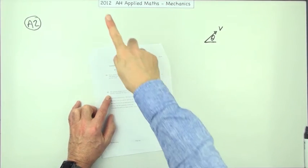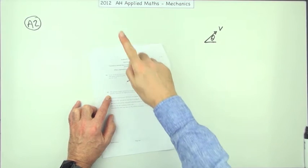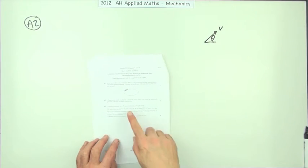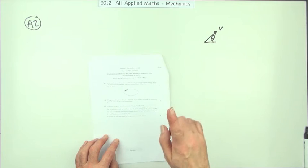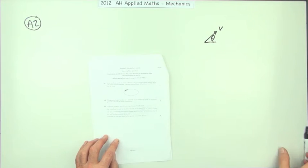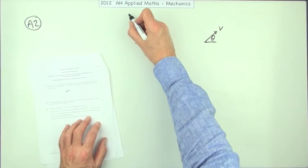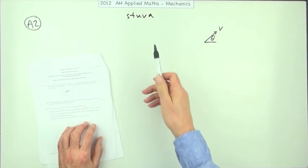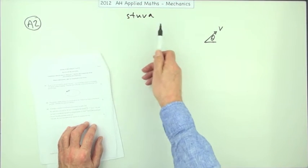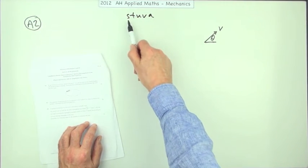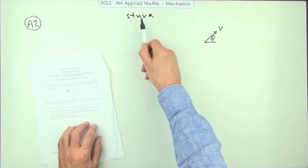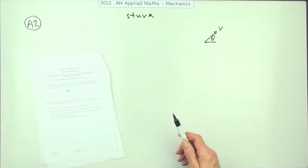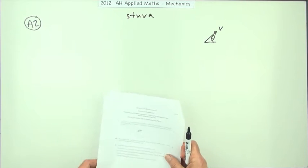Question two from the 2012 Advanced Higher Applied Maths Mechanics — a projectile question, sometimes known as a SUVAT question. That's just the case of applying whichever of the equations using the quantities of distance, time, initial velocity, final velocity, and acceleration will get you towards the answer.